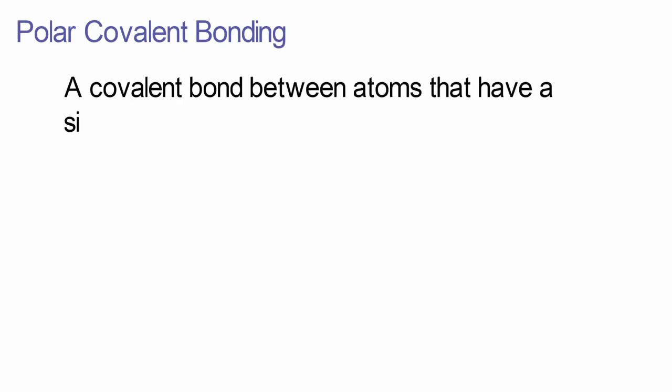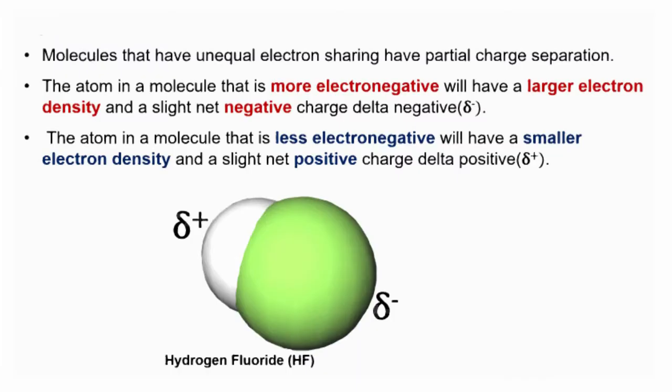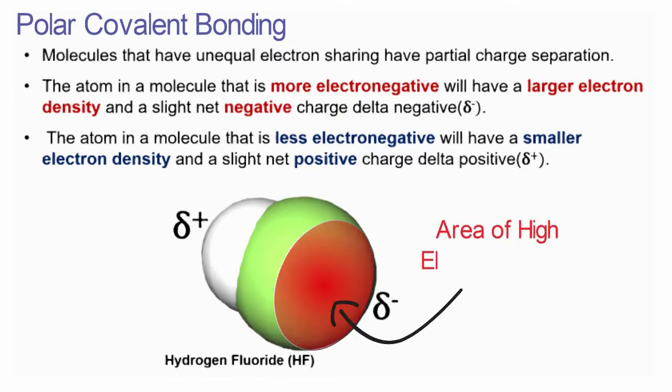Polar covalent bonding is the unequal sharing of electrons between atoms. Molecules that have unequal electron sharing have a partial charge separation on the bonded atoms. The atom in a molecule that is more electronegative will have a larger electron density and a slight net negative charge, termed delta negative. The atom that is less electronegative will have a smaller electron density and a slight net positive charge, termed delta positive. In this hydrogen fluoride molecule, the higher electron density is centered on the fluorine atom because fluorine is more electronegative than hydrogen. The fluorine is delta negative and the hydrogen is delta positive.